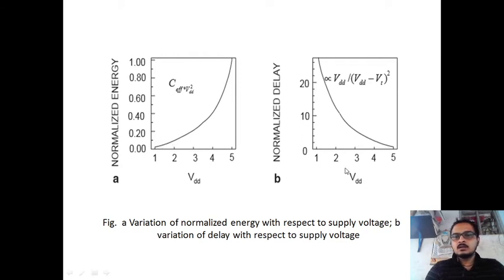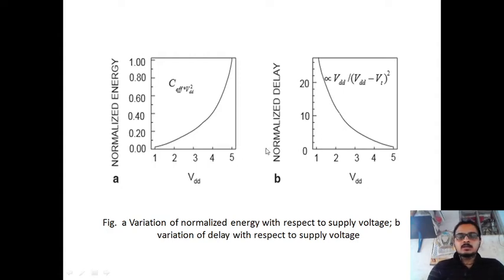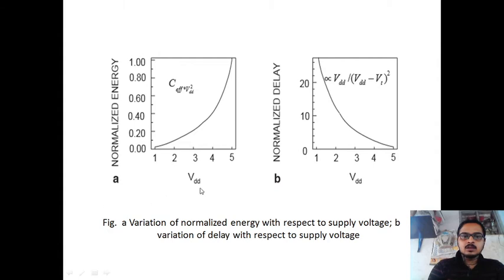In this figure, when you scale the VDD downward, the normalized delay increases — meaning performance decreases. When you scale the supply voltage, the advantage is that power dissipation (both static and dynamic) decreases, but the disadvantage is that performance decreases as delay increases.